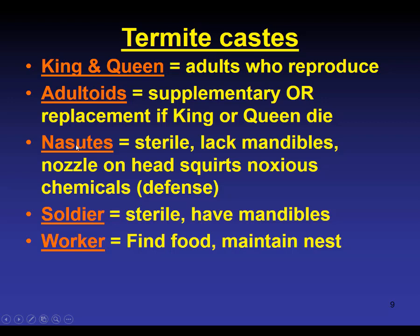The Nasutes are sterile and don't have big scary mandibles, but they are part of the defense. Their particular defense mechanism is a squirt nozzle on the top of their head that squirts out nasty chemicals at invaders. Other soldiers in the colony also sterile — they have big scary mandibles and giant heads because they have a lot of muscle to move those mandibles, used for slicing and dicing any invaders.